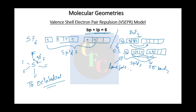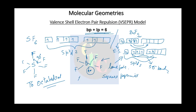With one lone pair in the sp3d2 system, you can place the lone pair anywhere because, unlike the trigonal bipyramid, in octahedral geometry all six positions are equivalent — there is no distinction between axial and equatorial. This gives rise to a structure called a square pyramid.